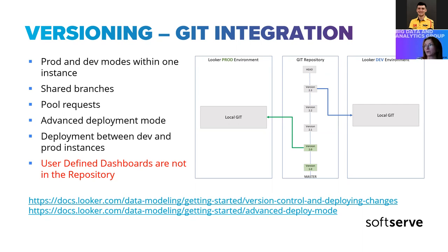When working with the production environment, you can choose which commit or branch to deploy to production. You can move forward in development, do commits of various versions, but the production environment will still be on an earlier version. Importantly, in the Git repository, only your data model is stored — user-defined dashboards are not part of the project and not part of the Git repository.